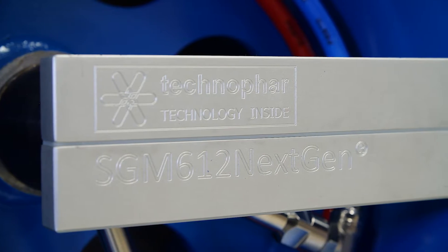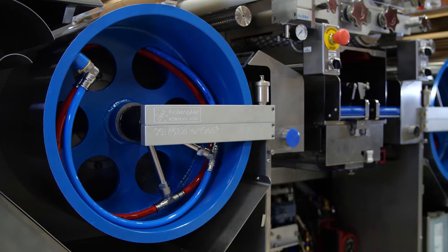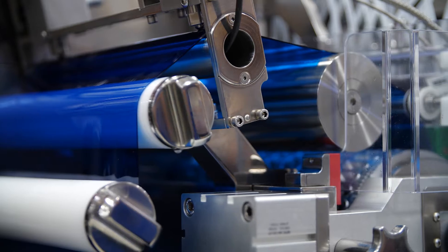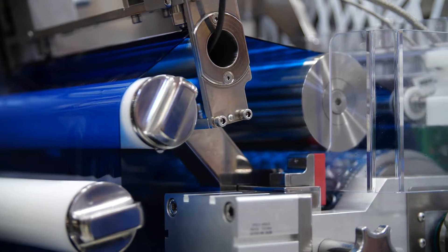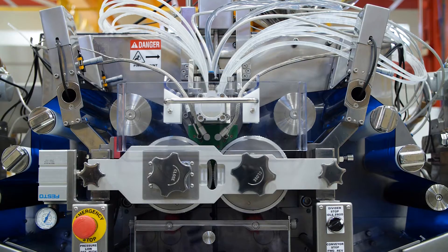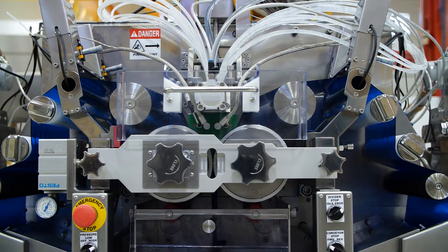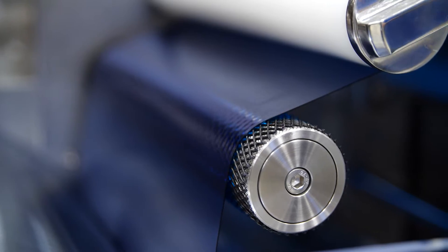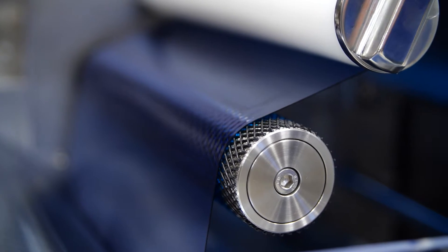The SGM 612 NextGen allows for improved access to all sections for GMP cleaning. The performance of the machine provides a maximum speed of 8 rpm, with standard running speeds of 4.5 to 5.5 rpm for suspensions and pastes, and 5 to 6.5 rpm for standard oils.